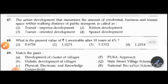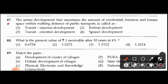Question 47: Urban development that maximizes the amount of residential, business, and leisure space within walking distance of public transport is called transit impetus development, ribbon development, transit oriented development, or sprawl development. The right answer is option 3: transit oriented development.